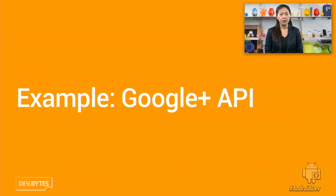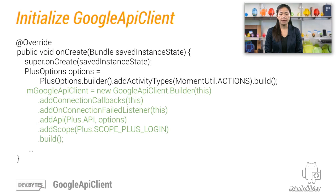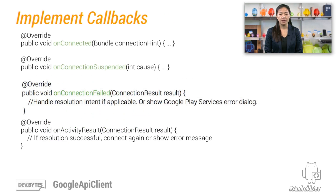To review everything we went over, let's walk through an example. We are fetching the visible people in a user's G Plus circles, which can be useful, for example, to create a social experience in an app. First, we set up the Google API client and set the Plus API scope and connection callbacks. Then we implement the callback methods for connection succeeded, suspended, or failed. The connection could fail because it requires user intervention, for example, to choose an account. Then an intent would be returned in the connection result, and you should allow the user to resolve the problem and connect again.